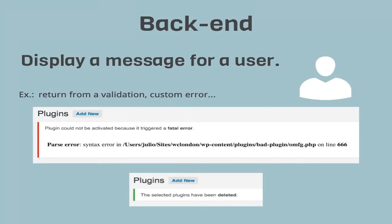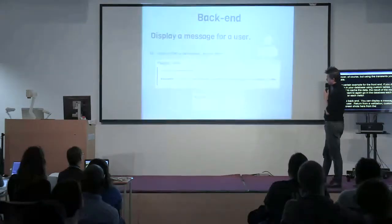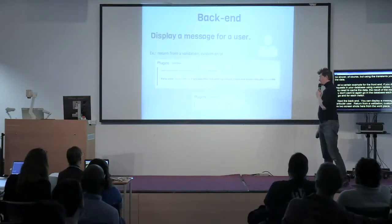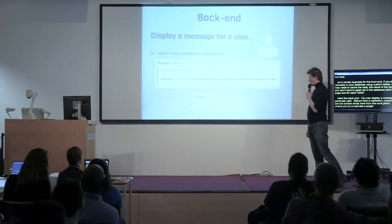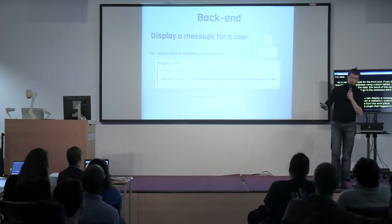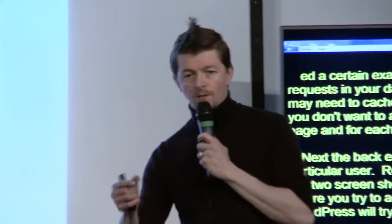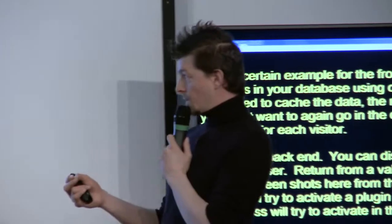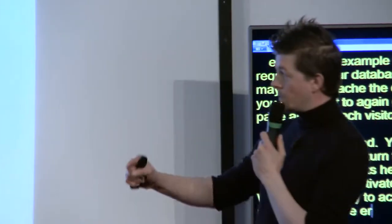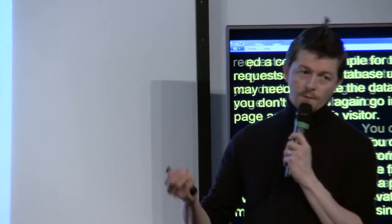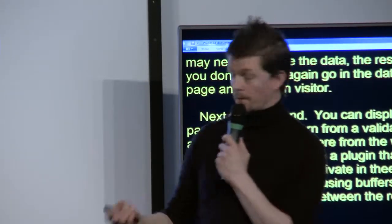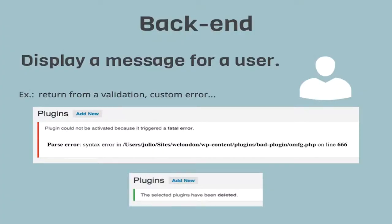An example for the backend: you can display a message for a particular user from a validation or a custom error. The two screenshots here are from the WordPress core. The first one is when you try to activate a plugin that triggers a fatal error. WordPress will try to include the plugin to activate it in a kind of sandbox mode, grab the error using output buffers, and then you need to refresh the page.